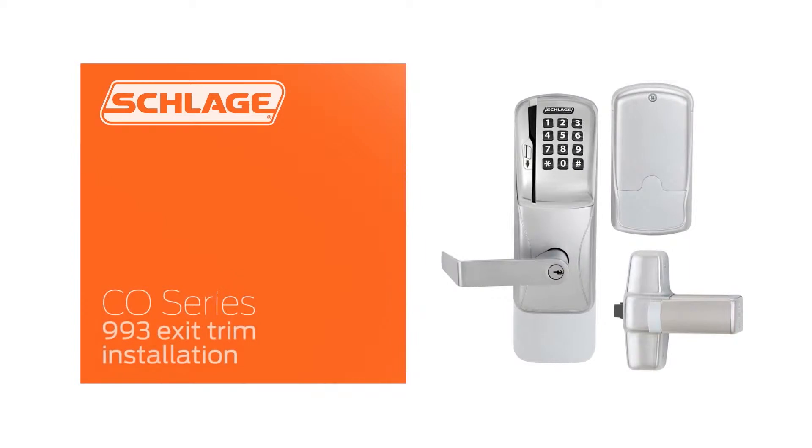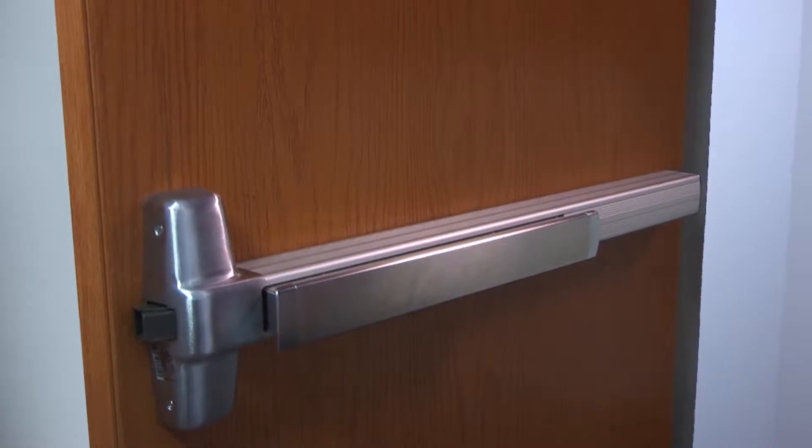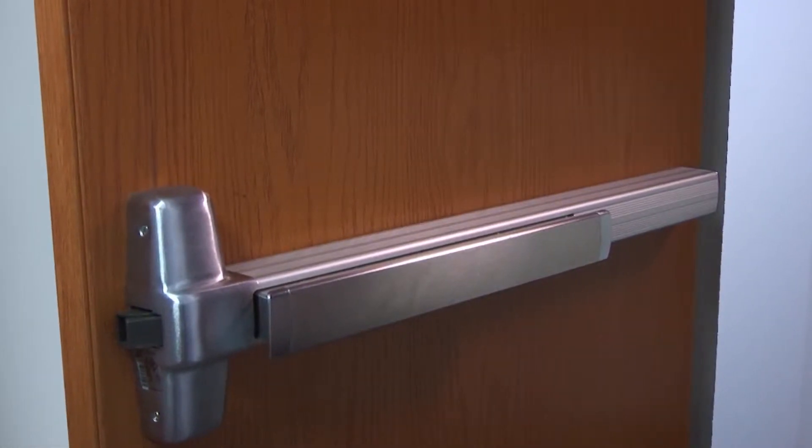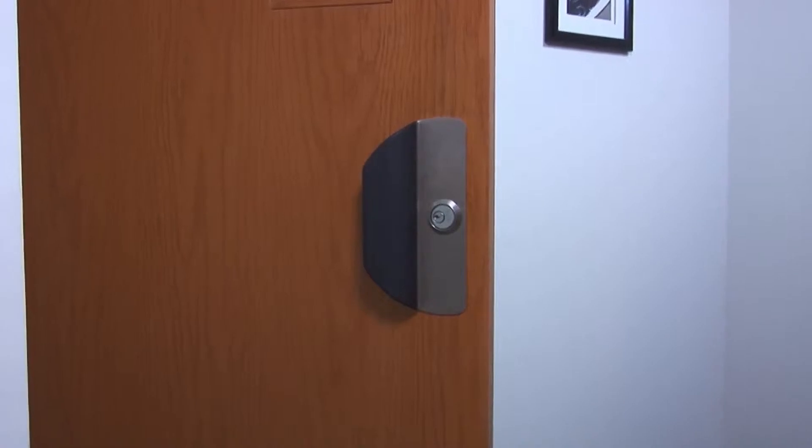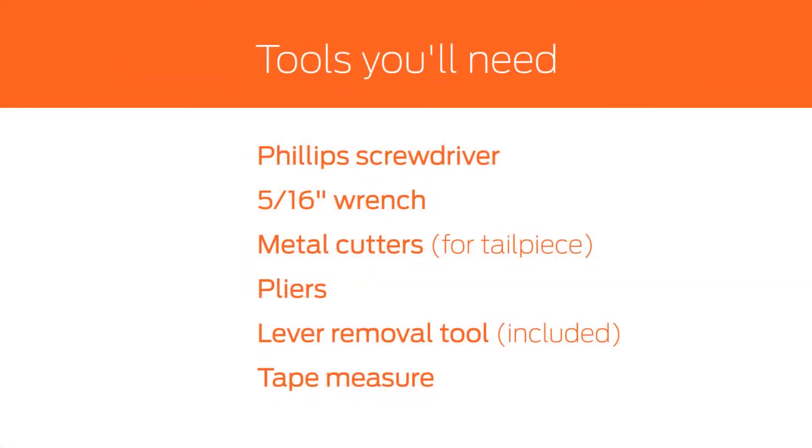In this video we will demonstrate how to retrofit an existing opening with a CO Series 993 exit trim. The door currently has a Von Duprin 99 rim exit device with a night latch function pull trim. These are the tools you'll need for this installation.